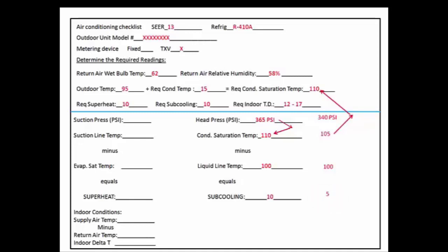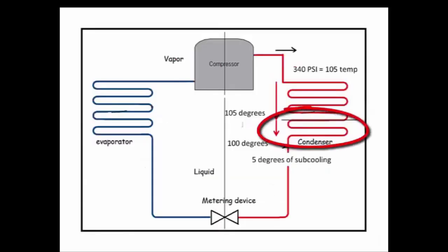Well we know a couple of things here. We know that our head pressure is low. Up above, the required condenser saturation temperature should be 110, but it's actually 105. And since the condenser saturation temperature is low, head pressure is low as well. So that's indication number one. Indication number two is we have low subcooling. We only have 5 degrees of subcooling and we should have 10. Those two things are going to tell us that we have a low level of refrigerant in our condenser.